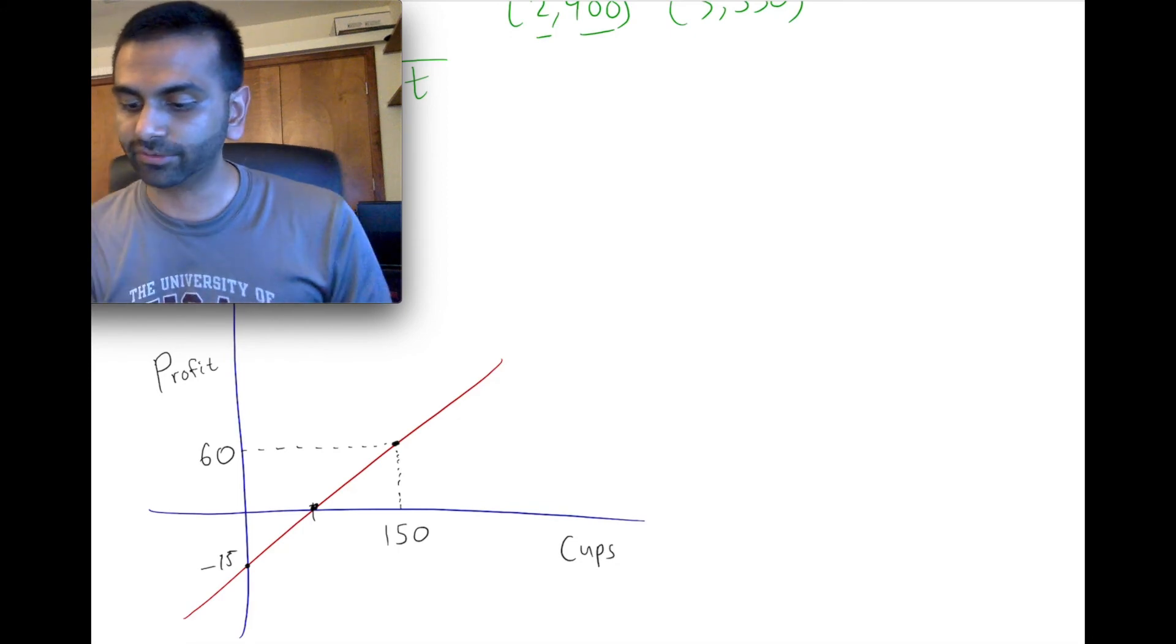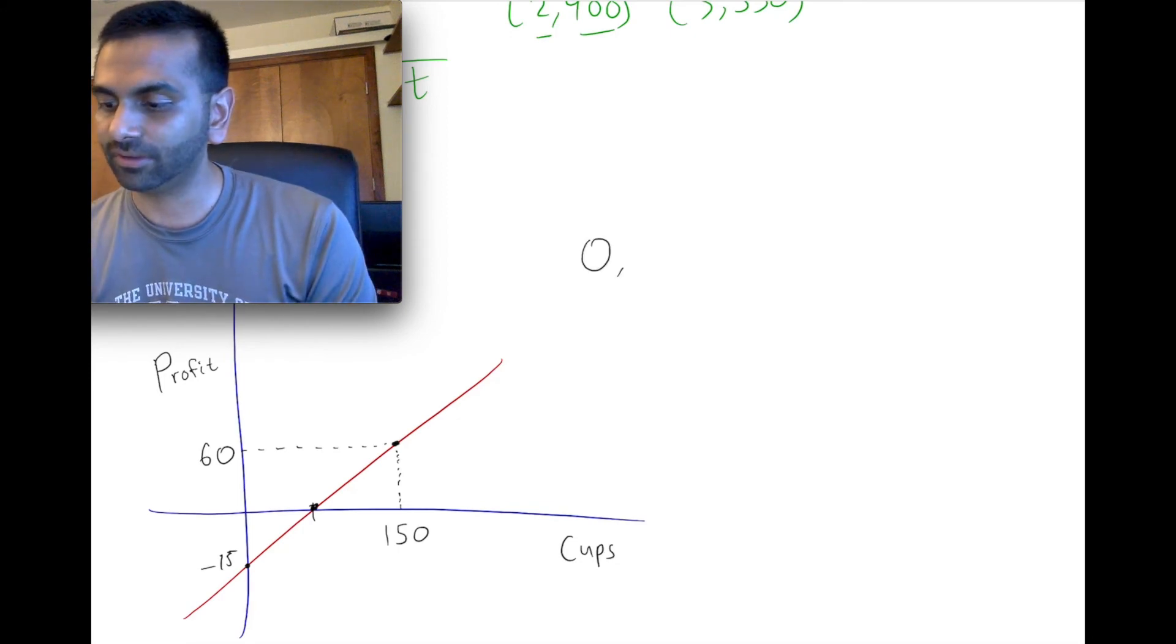We're basically given two points. We're given the point when X is zero, Y is negative 15. And we're also given the point when X is 150, Y is 60.